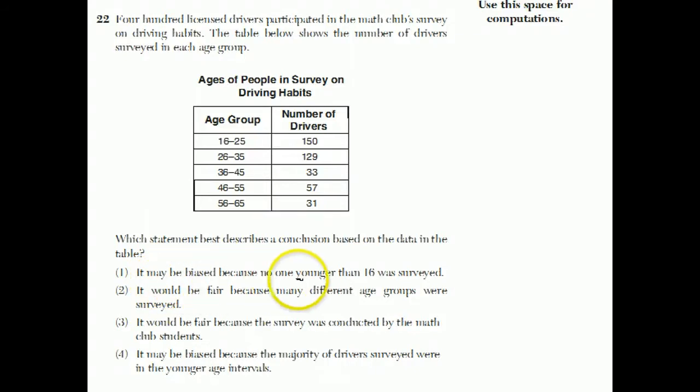Choice 1 says it may be biased because no one younger than 16 is surveyed. Well, I think this one's not right because, in general, people under 16 aren't allowed to drive anyway. Choice 2, it would be fair because many different age groups were surveyed. Well, it's true that a lot of different age groups are surveyed, but some age groups were surveyed and had a lot more representation than the others. So, I think this is not going to be the answer.